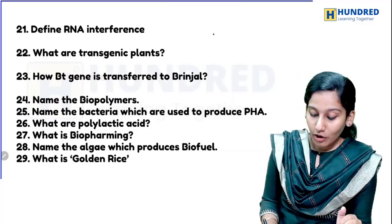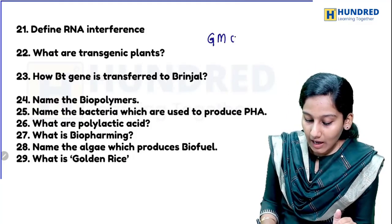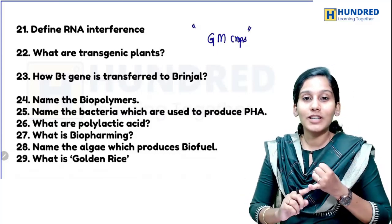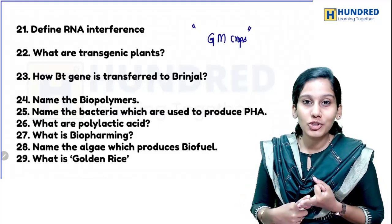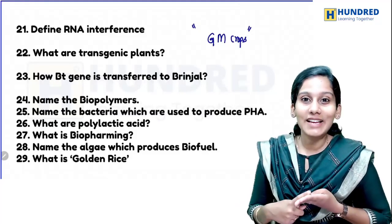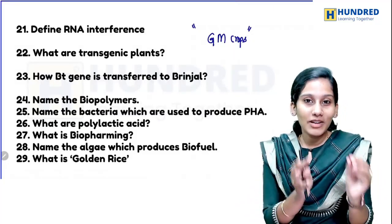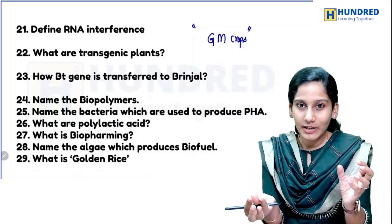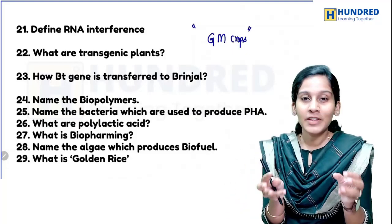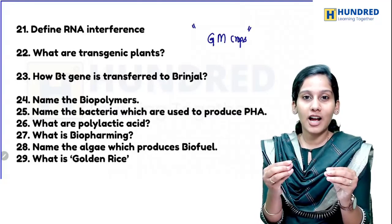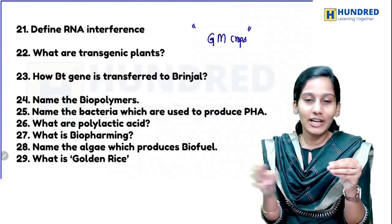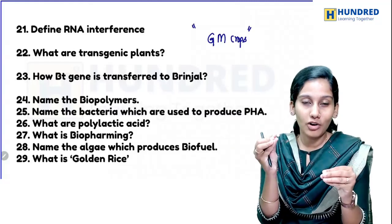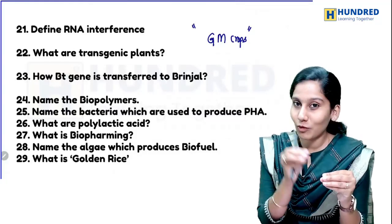Genetically modified crops — the second half of the chapter is very, very important. Topics include BT cotton, Flavr Savr tomato, BT brinjal, and golden rice. Understand how these differ from normal varieties — a natural change is stopped or prolonged using technology involved.